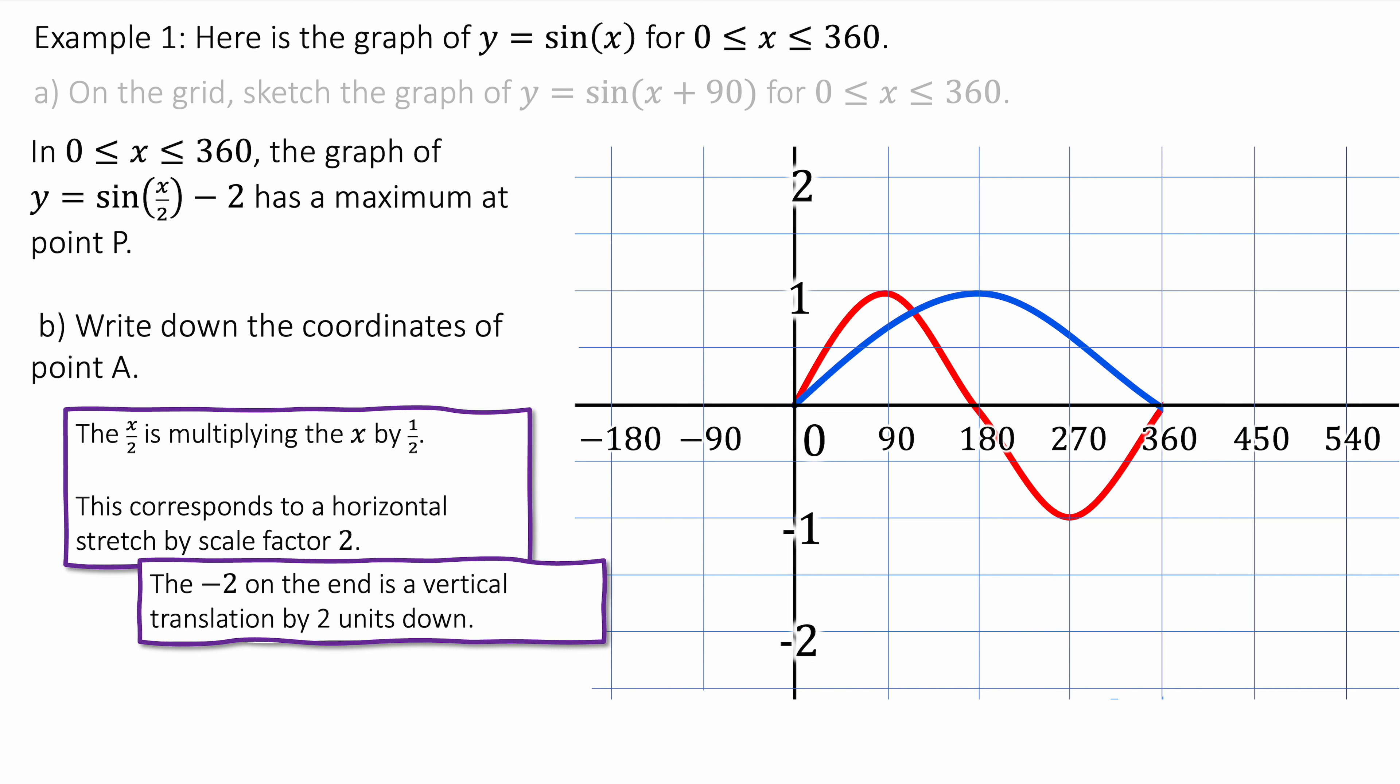And then we're going to shift it down by 2 units. So we're subtracting 2 on the end of the function. And it will shift it down by 2 units. Like this. And where is the new maximum? It is at 180 minus 1. That is the new maximum.